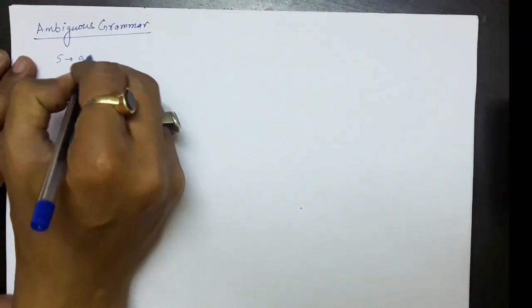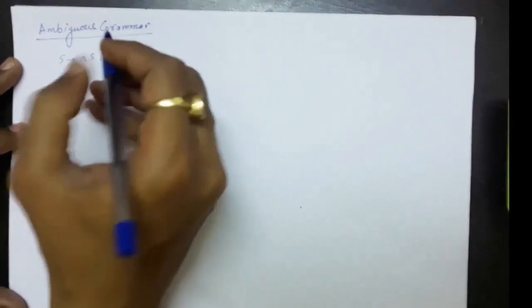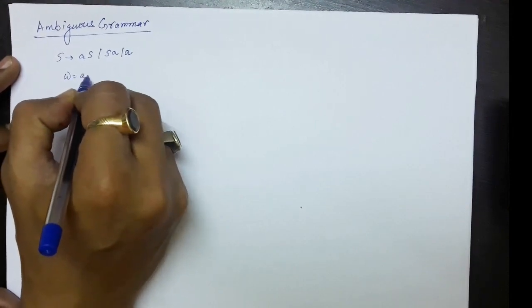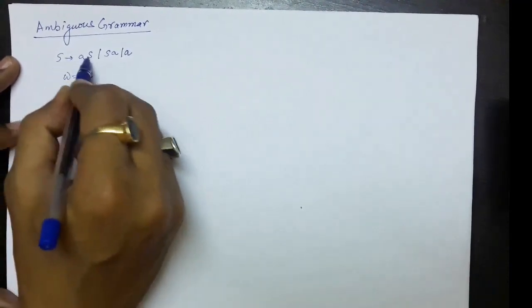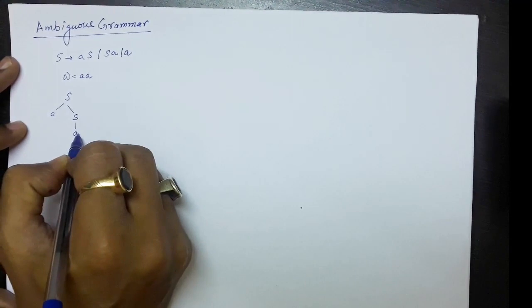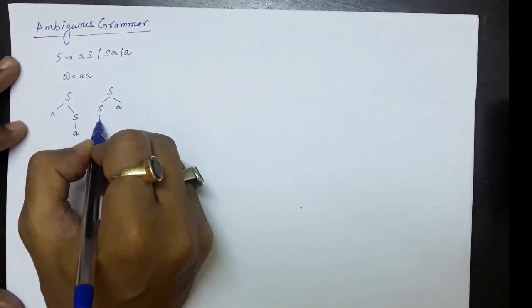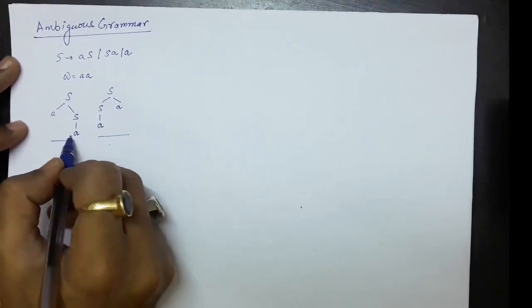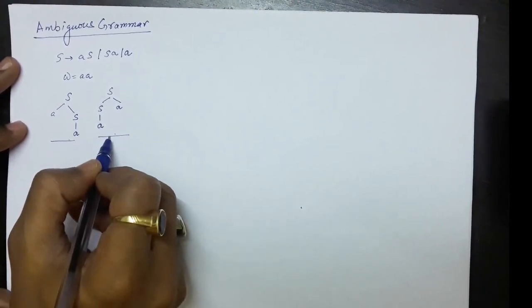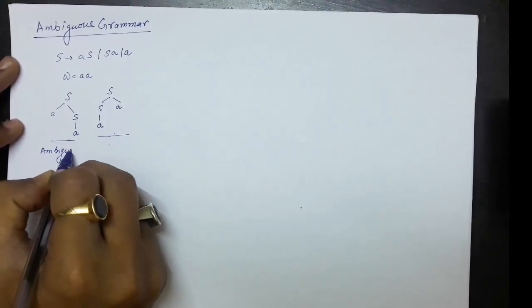For example, if we have a grammar where S produces aS or Sa, and the string we have to derive is 'aa', for this we can use the aS production: S produces aS and then S can be changed to 'a'. Or alternatively, S produces Sa and this S can be changed to 'a'. So there are two derivations possible, meaning two different derivation trees are possible, so we say the grammar is ambiguous.